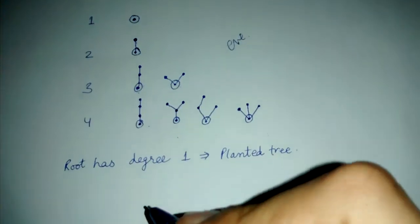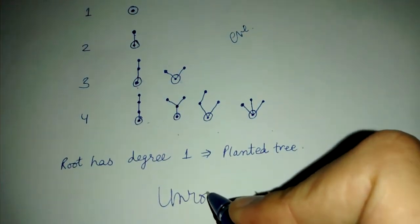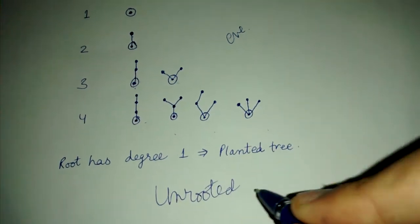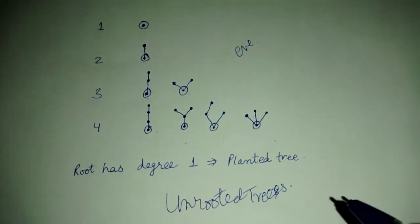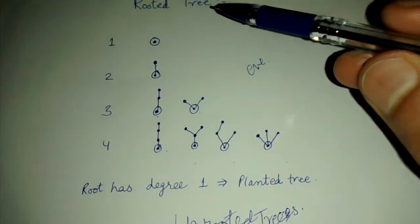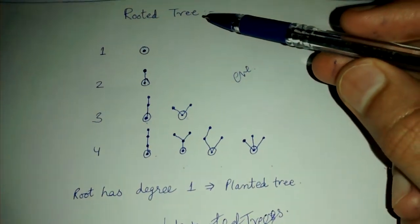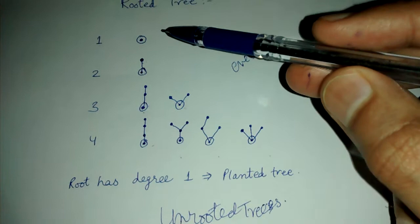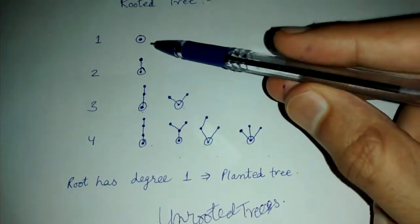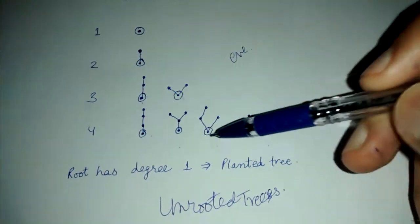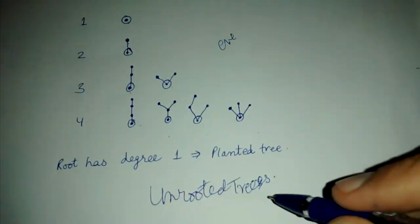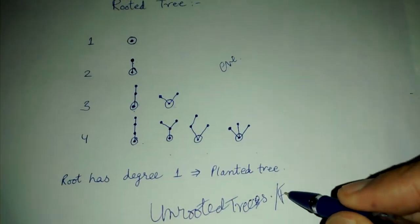We will be looking at unrooted trees. So in the last lecture we saw that a rooted tree is one in which one of the nodes is special. It is marked as the root or the eve. But in unrooted trees, or they are also